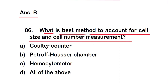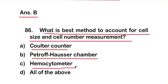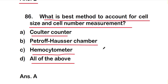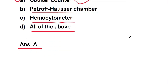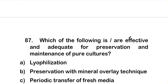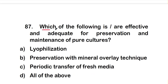Question number 86: What is the best method to account for cell size and cell number measurement? Option A: Coulter counter, option B: Petroff-Hausser chamber, option C: hemocytometer, option D: all of the above. The right answer is option A — the Coulter counter is the best method to account for cell size and cell number measurement.